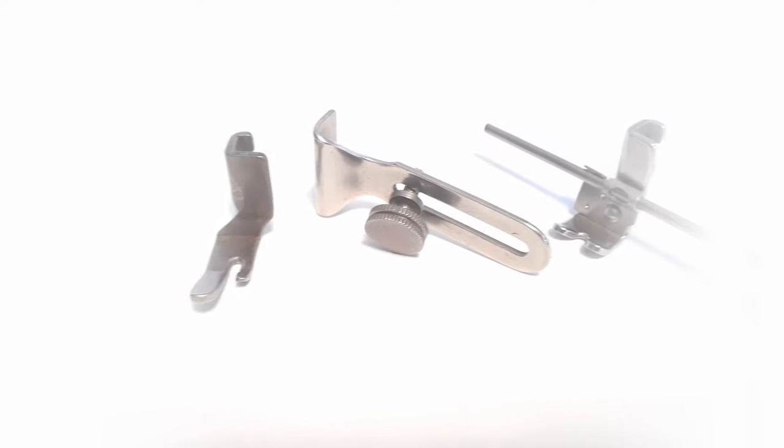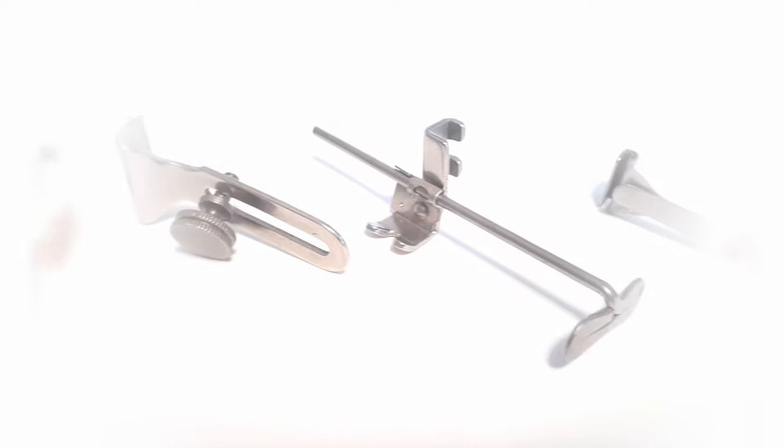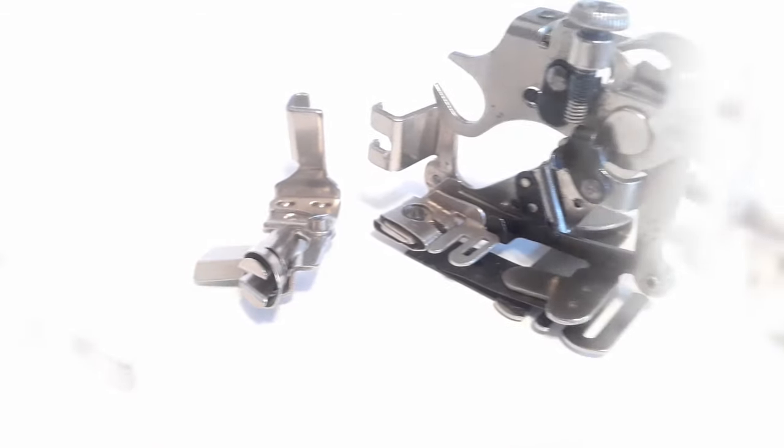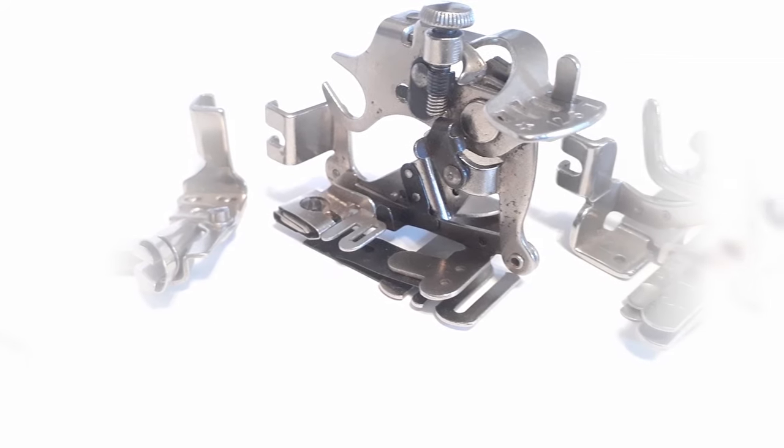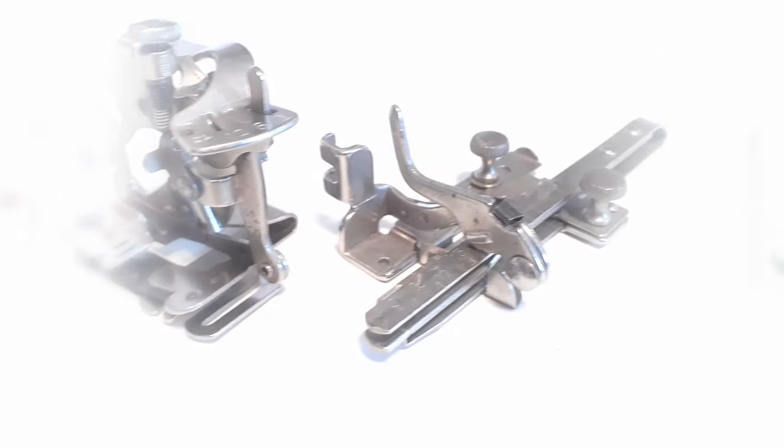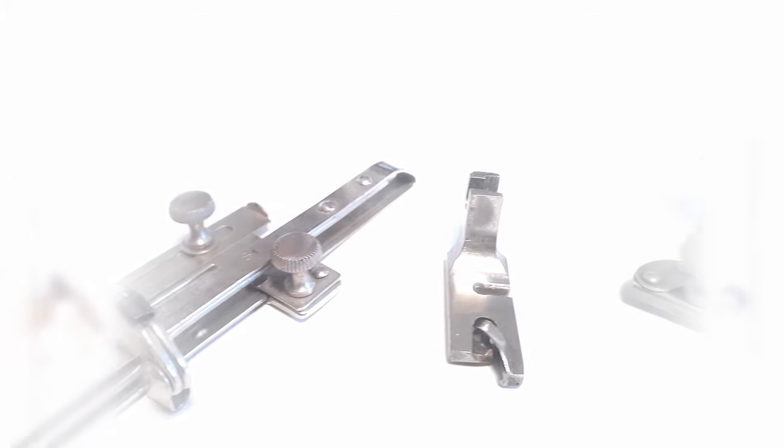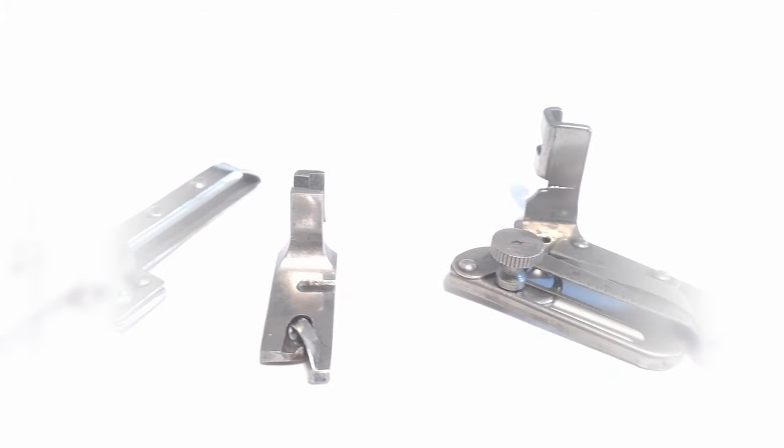Presser foot, which is normally found on the machine, seam edge guide, quilter, bias gauge, binder, ruffler, tuck marker or tucker, hemmer, and adjustable hemmer.